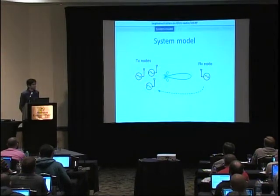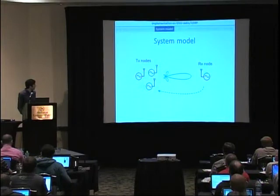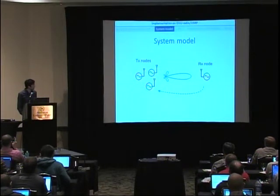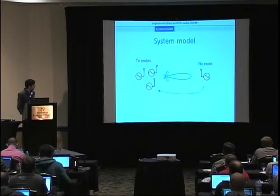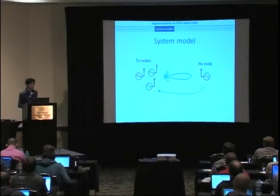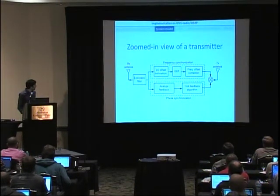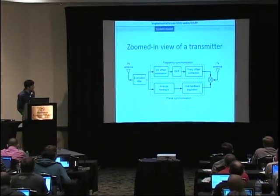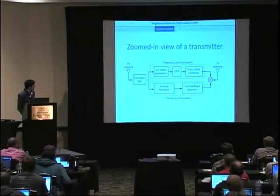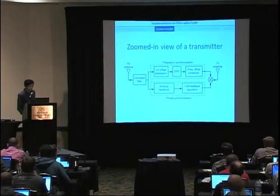Let me explain the system model we used. We have a bunch of transmitters that want to direct their energy toward one receiver, and the receiver sends back feedback information — precisely the information used by the one-bit feedback algorithm. Inside a single transmitter there are two parallel processes: the top process is responsible for frequency synchronization, and the bottom part is responsible for phase synchronization.